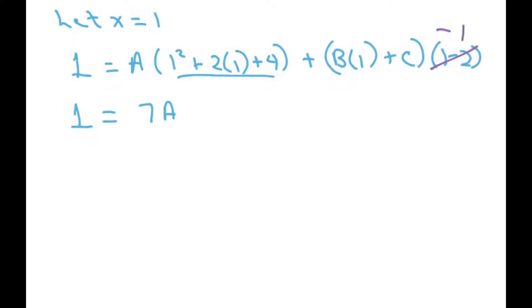Alright, now finally, we're going to let x equal 1. Then we have 1 equals A times 1 squared plus 2 times 1 plus 4 plus B times 1 plus C times 1 minus 2. So that gives you 1, and this is 7, so that's 7A, and then we're going to have, this is negative 1 here, so you're going to get minus B, and then minus C.